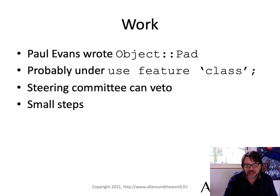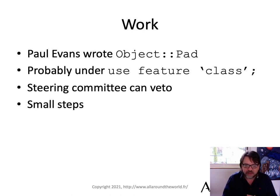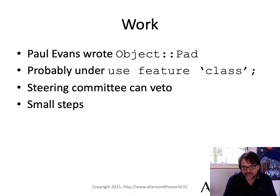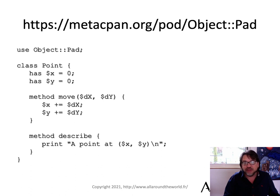It will probably, if it gets available, be under 'use feature class' so that we have a guard to make sure that it's safe. The steering committee might just veto it, or P5P might veto it — P5P might say that's really great, but there are too many changes to the Perl core and we just don't want to maintain it. We don't know yet. But the steering committee is receptive to the idea, which is good.